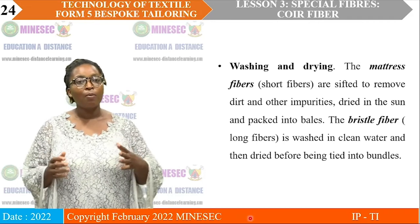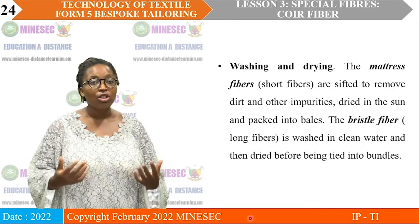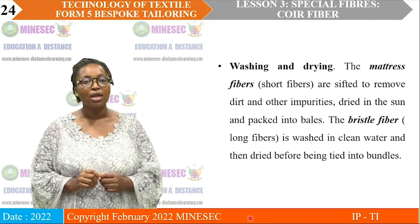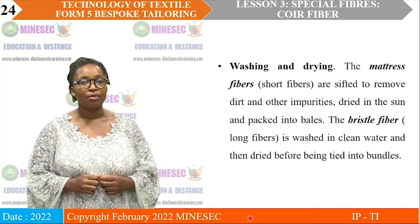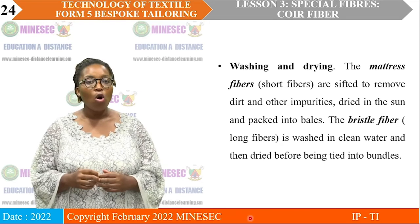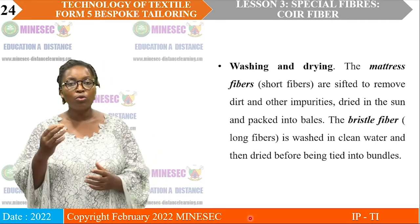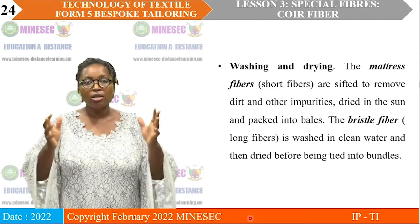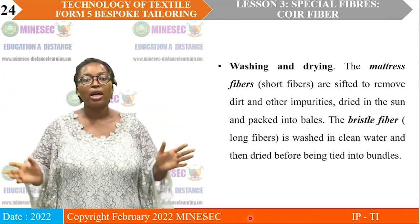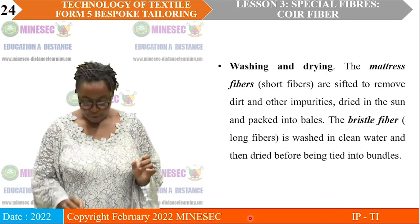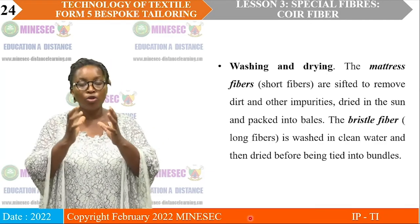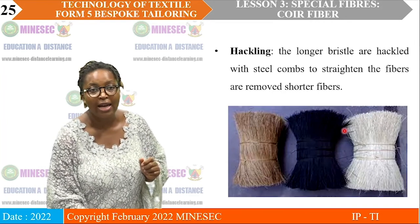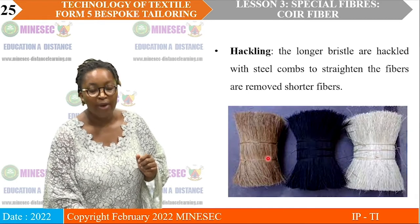After the wet retting process, we wash and dry the fibers. The shorter fibers (mattress fiber) are cleaned to remove dirt and impurity, dried in the sun, and packed into bales — like cotton. The longer fibers (bristle fiber) are washed in clean water and dried before being tied into bundles, like broom bristles. You can see the longer fibers here tied in bundles.